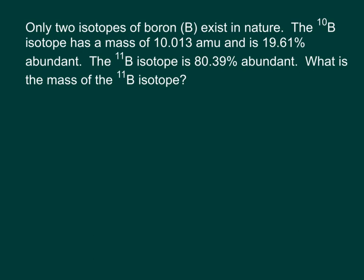Now let's do an example of calculating the isotope mass given the percent abundances and the mass of one of the isotopes, but not the other. Only two isotopes of boron exist in nature. The B-10 isotope has a mass of 10.013 amu and is 19.61% abundant. The B-11 isotope is 80.39% abundant. So what is the mass of the B-11 isotope?